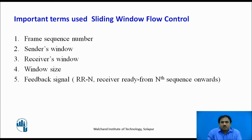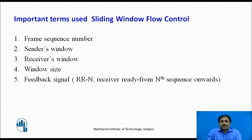Before we start the actual mechanism, let us understand some important terms used in sliding window flow control. In this mechanism, we use frame-based communication. Each frame is given a sequence number. At the sender side, we manage one window, and we also manage one window at the receiver side. Before communication starts, we define the window size. During communication, they use a feedback signal named Receiver Ready for the nth sequence number, or RRn.